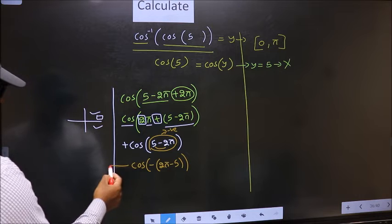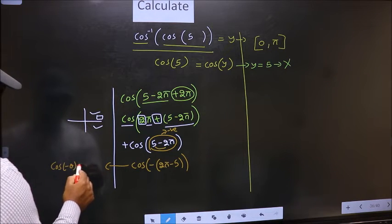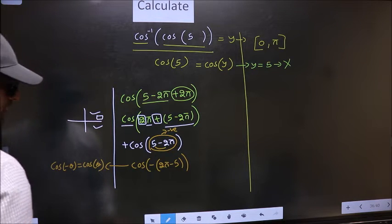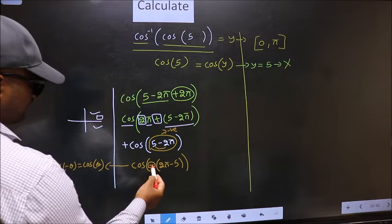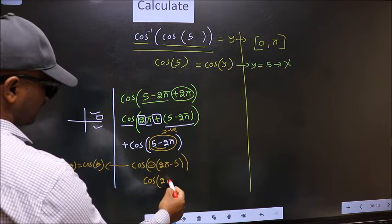Now on this I will apply the formula. Cos minus theta is cos theta. Negative angle becomes positive. So this negative symbol we don't need to write. We get cos 2 pi minus 5.